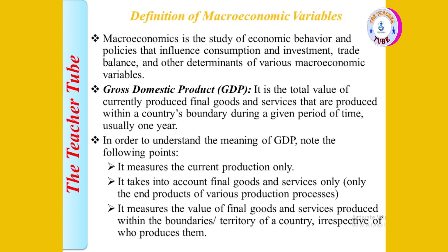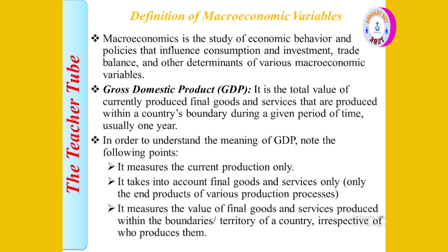Gross domestic product measures the value of goods and services produced within the boundary or territory of a country, irrespective of who produces them. It does not matter whether the producer is a citizen or a foreigner — as long as production occurs within the territory.